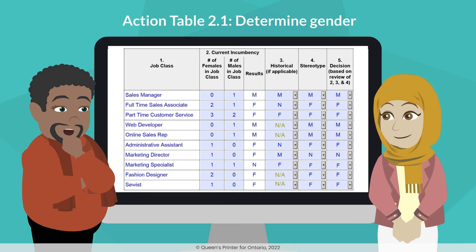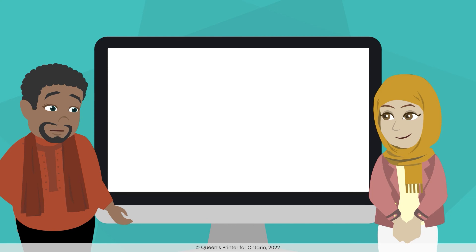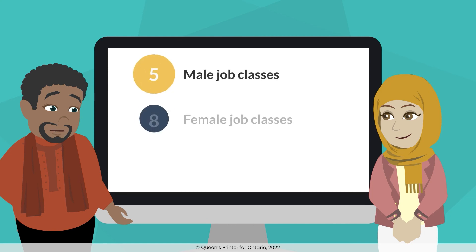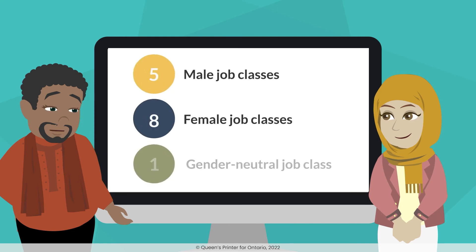It's great to be learning about my own biases through this process. It looks like we now have five male job classes, eight female job classes, and one gender-neutral job class. We can now proceed to Step 3 because we have both male and female job classes to compare.